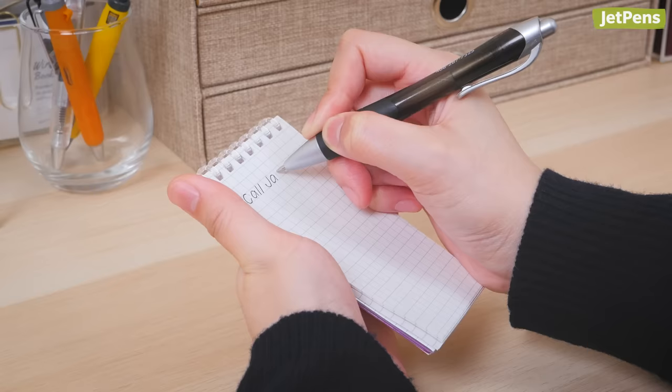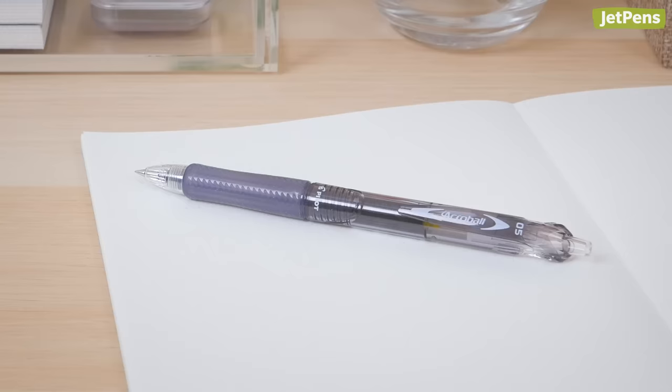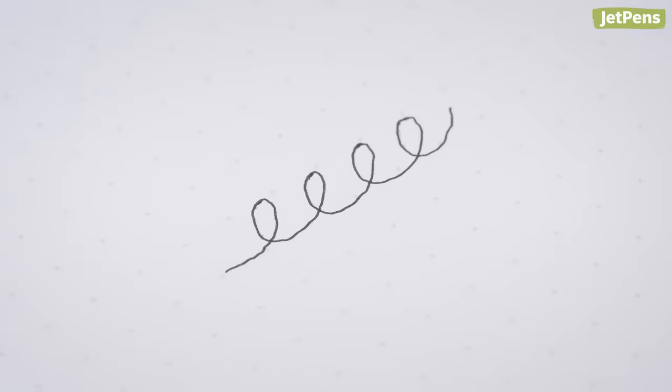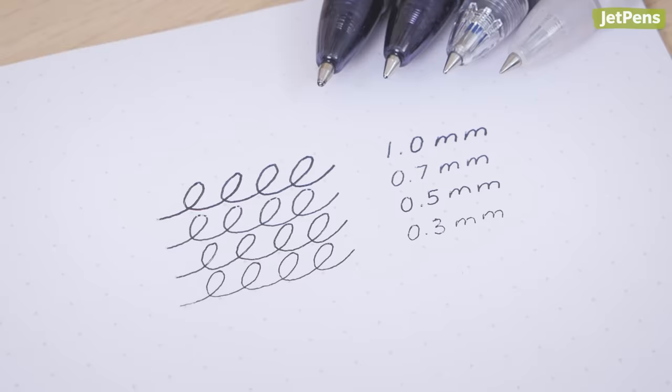Typical ballpoint pens use highly viscous inks, which require more pressure when you write. The Pilot Acrobolt Vibrant Smooth Ink makes it feel like a gel pen, yet it dries nearly instantly. It comes in a wide range of tip sizes and colors.